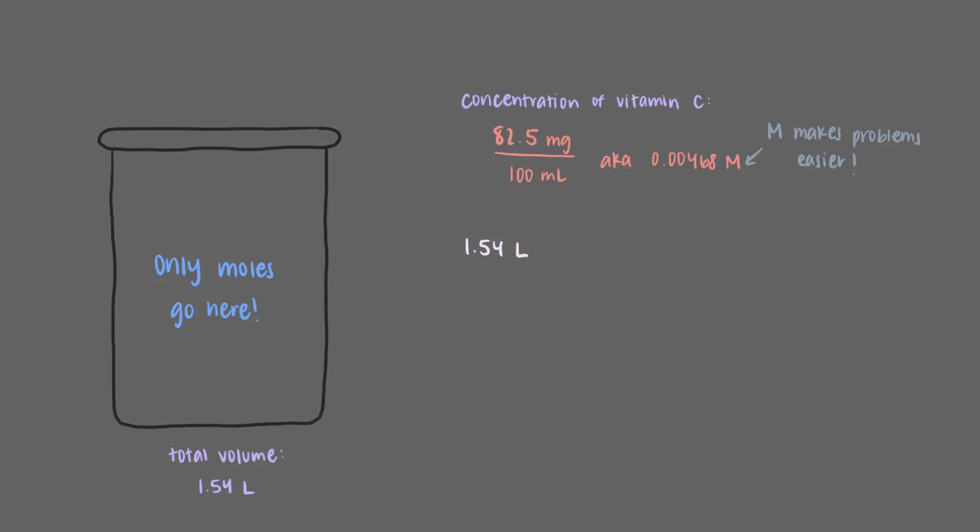Whenever we see M, we'll always change it to moles per liter, so that we have a conversion factor. M is useless unless you change it into the actual units it represents. Once we multiply everything out, we can see that there are 0.00721 moles of vitamin C in this 1.54 liter carton of orange juice. We'll put this in our beaker.